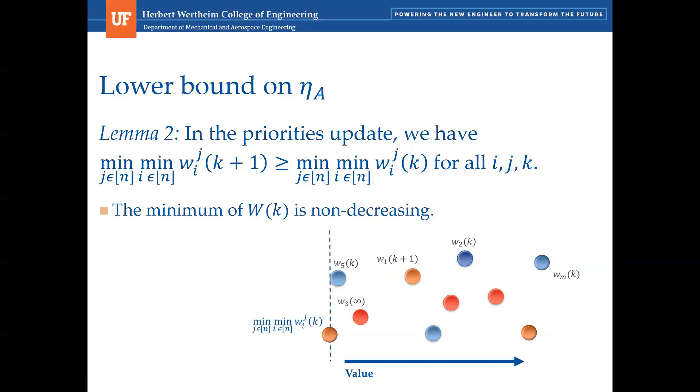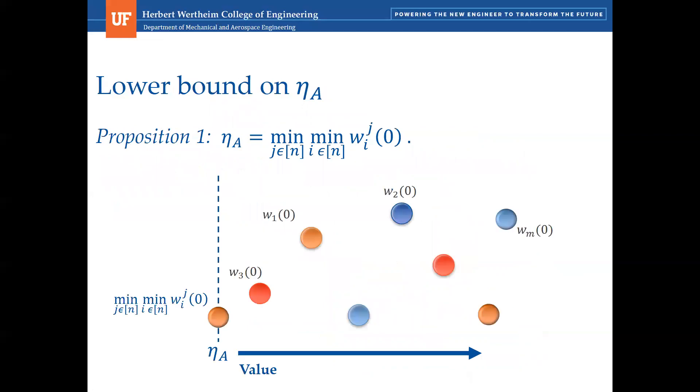Usually, eta A exists, but no information is given about its value. Here we can provide a lower bound for eta A. Lemma 2 says that the minimum of the agent's priorities is non-decreasing over time. Therefore, a bound for eta A can be established. Indeed, eta A is the minimum value of agent's initial priorities.